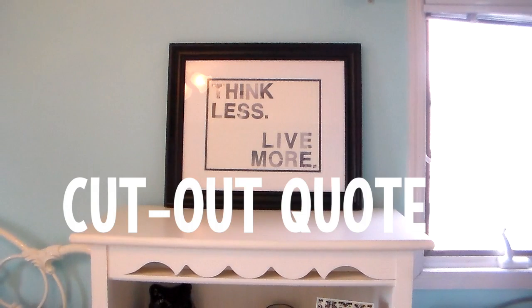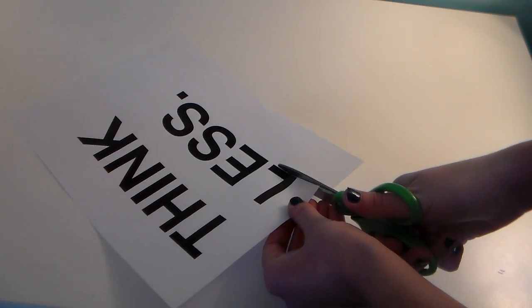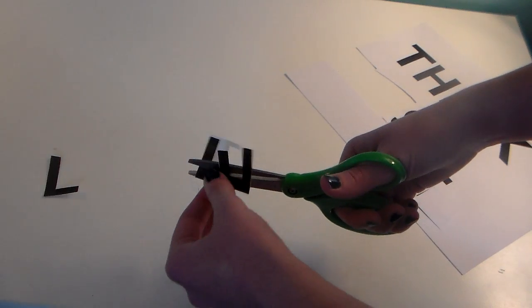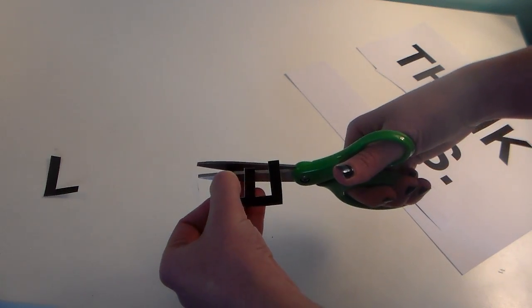For this DIY I tried to take the simple quote canvas and make it a little more interesting. First I printed out the quote that I wanted to put on the canvas, or the board in my case that I put in a picture frame. I cut all the letters out and I'm going to use these as a stencil.